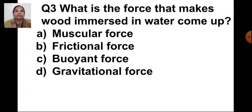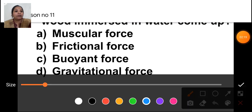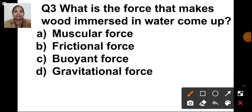The next question is: what is the force that makes wood immersed in water come up? Whenever an object is immersed in water either partially or fully, a force acts on that object in an upward direction. That's why the object feels lighter and comes up in the water. The options are muscular force, frictional force, buoyant force, or gravitational force. The answer is C, buoyant force.